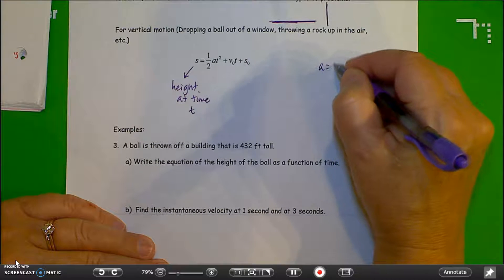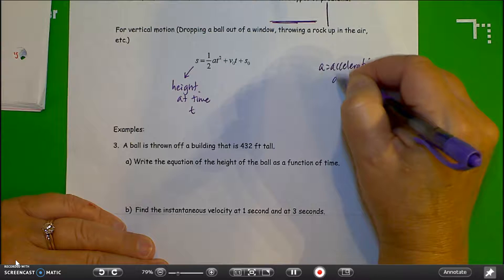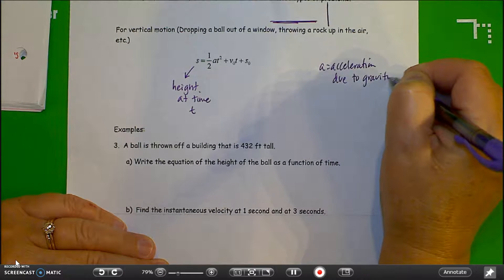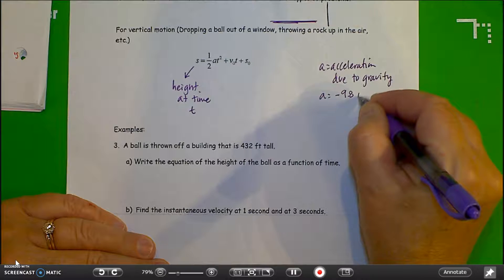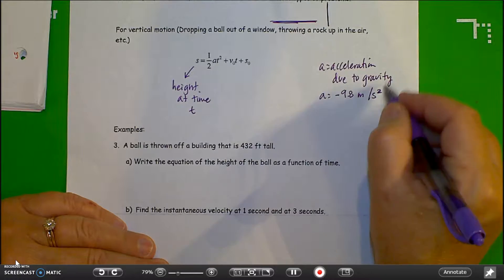Acceleration, A equals acceleration due to gravity. And there's two values we'd use. One is negative 9.8 meters per second squared metric.